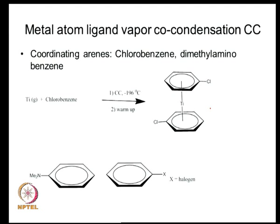Interestingly, you can even use compounds like chlorobenzene or dimethylaminobenzene as suitable substrates for this co-condensation technique. Here, you do not have the complication of requiring aluminum trichloride in the reaction mixture, so you can mix the two species conveniently even if the substituent is a very strong ligand for aluminum chloride, and form nice sandwich complexes.